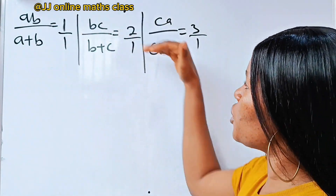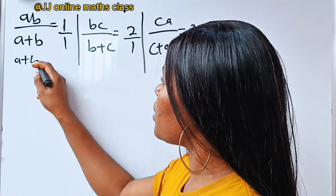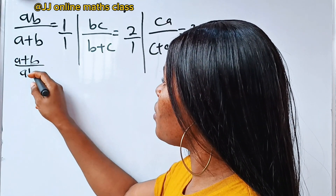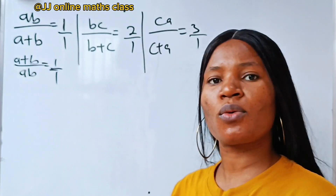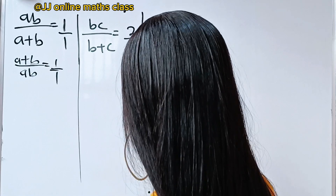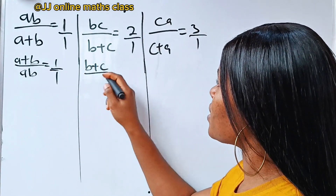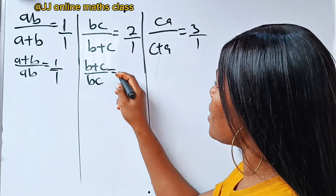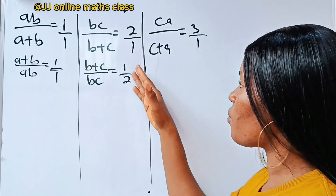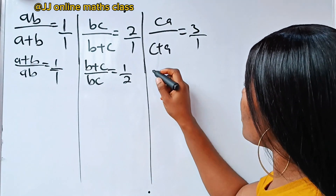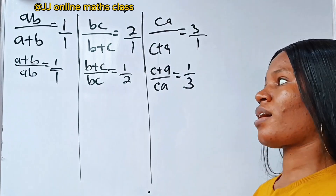Now, let's take the inverse of each of them. So if we take the inverse, it's going to be a plus b divided by ab, equal to 1 over 1, because the inverse of 1 over 1 is still 1 over 1. Similarly, for this side, we are going to have b plus c over bc is equal to 1 over 2. If we take the inverse of this side, we also take the inverse of this side. Then for this, we also have that c plus a over ca is equal to 1 over 3.